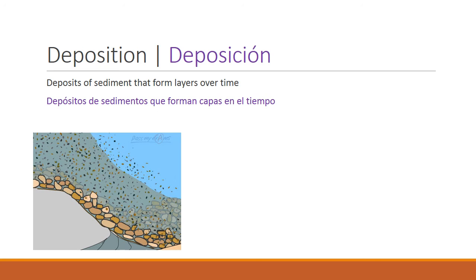Deposition refers to deposits of sediment that form layers over time. Sediments carried downstream by erosion are taken from one place to another — moving from a higher location to a lower location. As the location flattens out, mineral deposits build up on each other, eventually forming different layers that result in the formation of sedimentary rock.